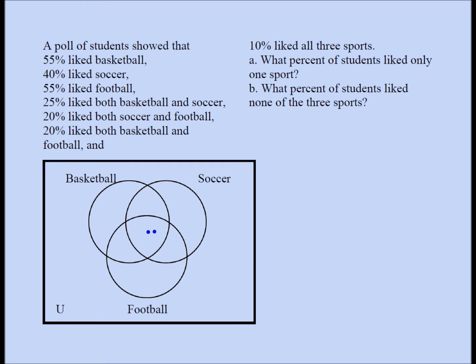The people in the center like all three sports. These people like basketball and soccer but not football. These people like soccer and football but not basketball. These people like basketball and football but not soccer. These people like only basketball. These people like only soccer. These people like only football. And these people like none of the three sports. You really want to understand what each region of the Venn diagram represents — otherwise the solution will not make any sense.